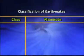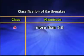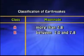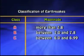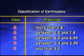Earthquake magnitude is the quantitative measurement of total energy released during an earthquake at its source. On the basis of magnitude, earthquakes are grouped into five classes: Class A, more than 7.8; Class B, between 7 and 7.8; Class C, between 6 and 6.99; Class D, between 5.3 and 5.99; and Class E, less than 5.3.